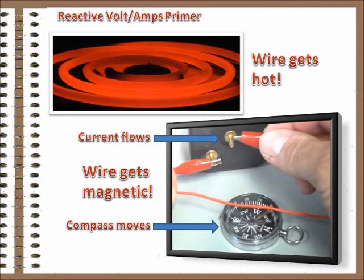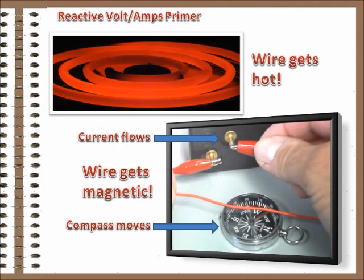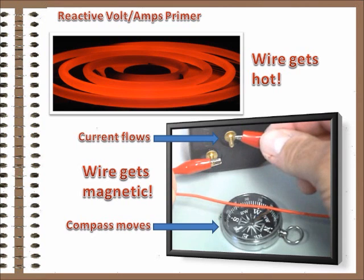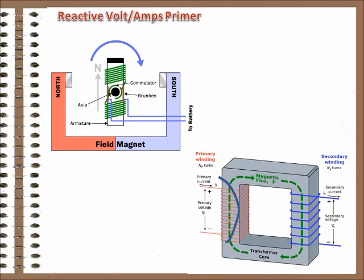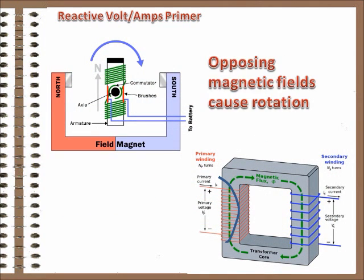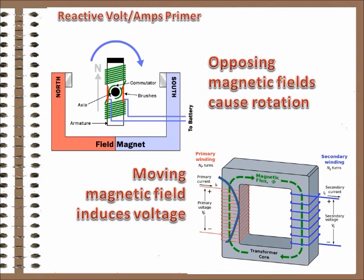The wire becomes magnetic, and that's a good thing, mostly. Because that's why motors work, and it's what allows transformers to do their thing, which is to raise or lower voltage.